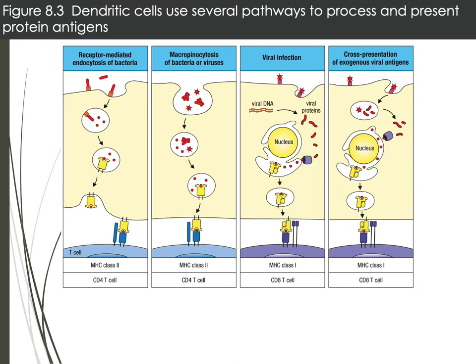Presentation to CD8 T-cells occurs through MHC class 1. If the dendritic cell becomes virally infected, it produces viral proteins, degrades them through the proteasome, and loads them onto MHC class 1 for presentation to CD8-positive T-cells. There is also cross-presentation, where extracellular viral antigens are taken up, degraded through the proteasome, and loaded onto MHC class 1. So MHC class 2 presents to CD4 T-cells, and MHC class 1 presents to CD8 T-cells.